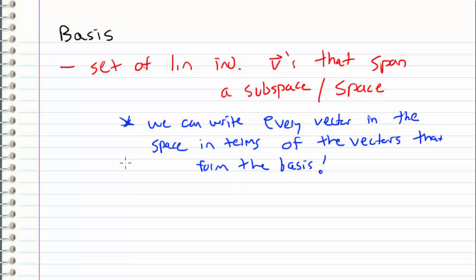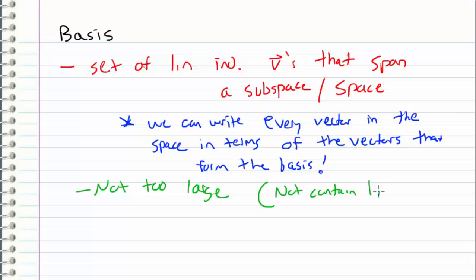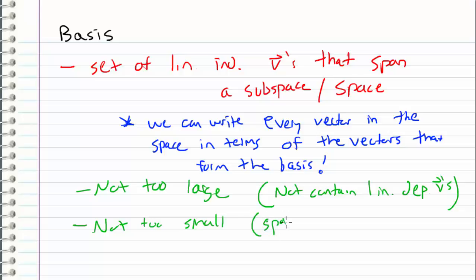A couple of other things to point out: the set of vectors that form a basis is not too large, meaning it does not contain linearly dependent vectors. And it's also not too small — there are enough vectors that allow the set to span the entire space. If we have a set of vectors that are linearly independent but do not span the entire space, then it's not a basis for that space.